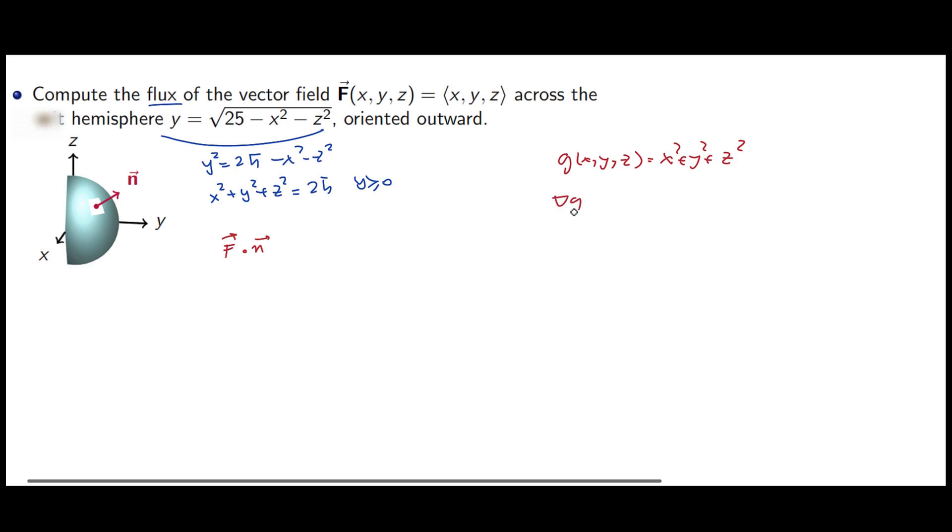So I'm going to find gradient of g, which is 2x, 2y, and 2z. Then, to find little n, I have to find a unit normal in the outward direction. Gradient is orthogonal to the surface. Gradient of g is orthogonal to the surface, but it's not in unit. Let's check if the orientation is the same. That orientation, you can check any point in the first quadrant and see the orientation is okay. So all I need to do is to find the magnitude of gradient of g.